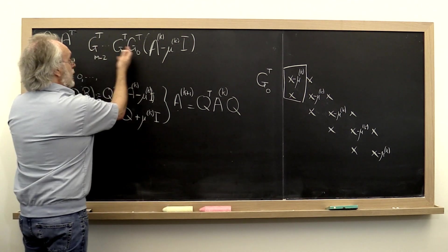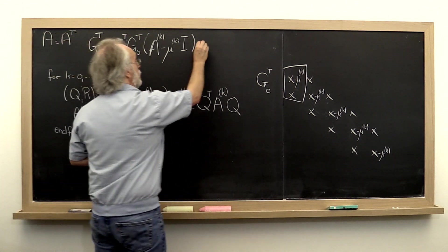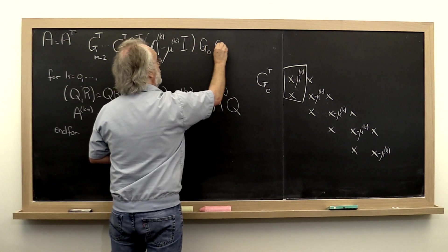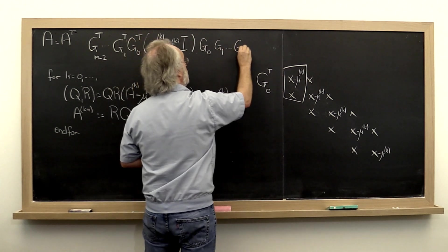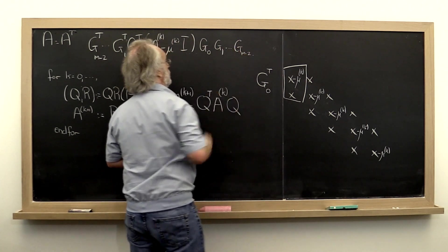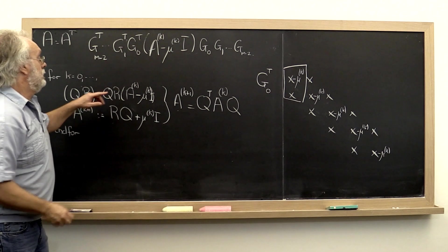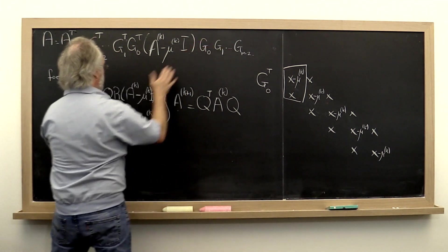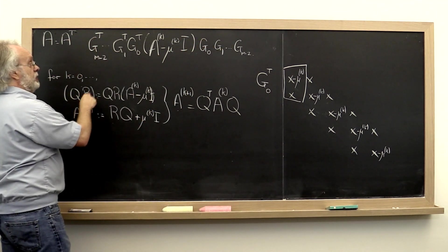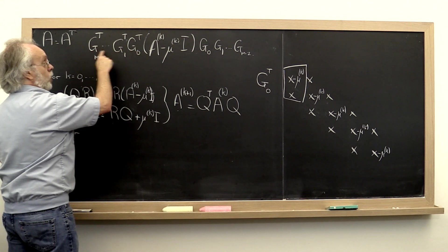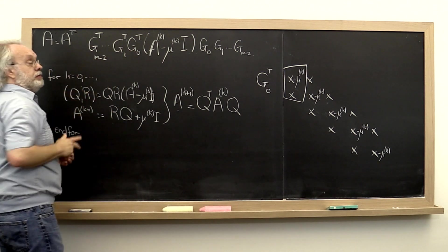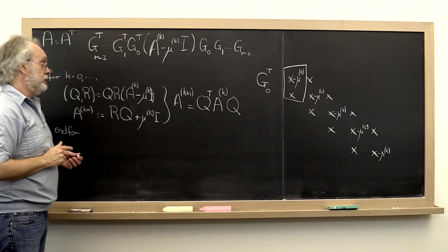And then once we have all of those Givens rotations, we apply them from the right. This first part gave us our QR factorization, except that our Q is not explicitly formed. It's given to us as a sequence of Givens rotations.